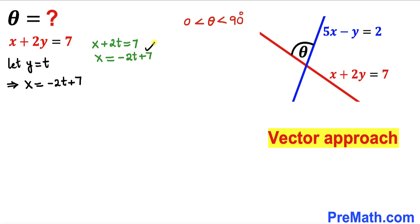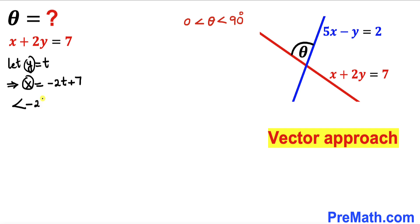So therefore as a result, our vector x, y can be written as negative 2t plus 7, comma t. Now let's focus on this blue straight line whose equation is 5x minus y equals to 2.